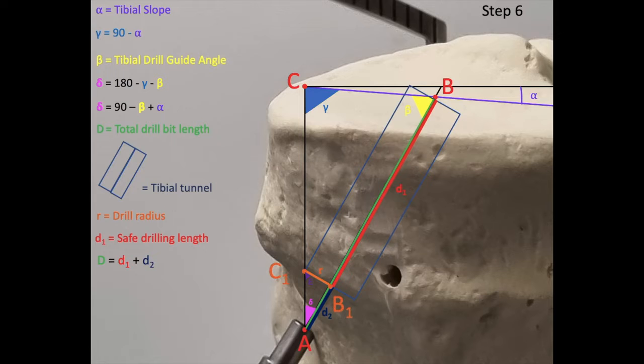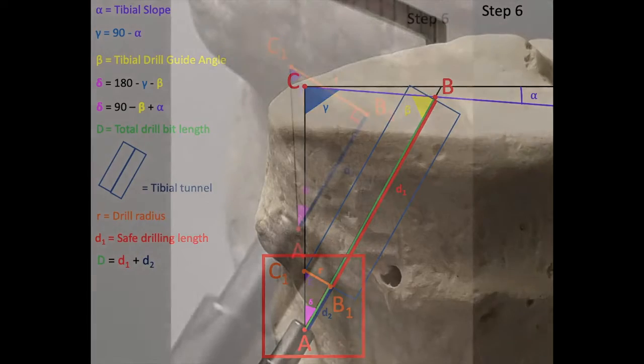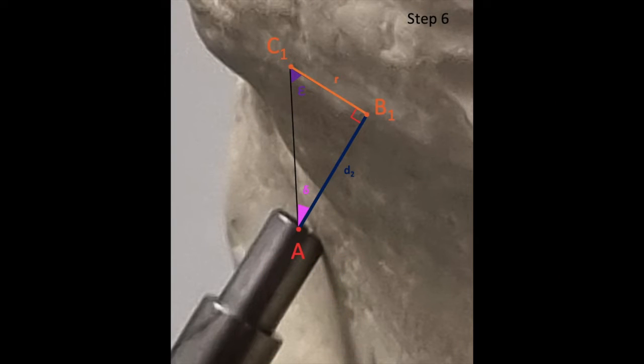We're going to do this by focusing in on the triangle AB1C1. Understanding the trigonometry of a right triangle, we know that D2 is equal to r, or the radius of the tibial tunnel, times the tangent of angle epsilon.